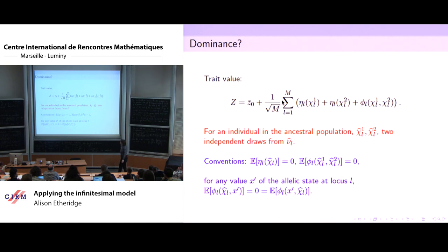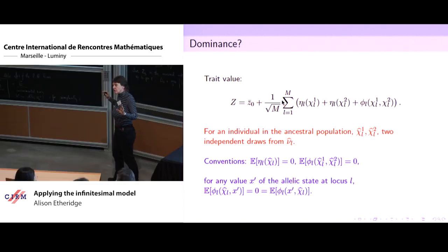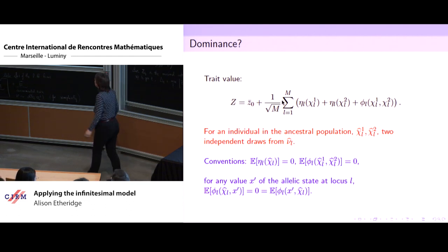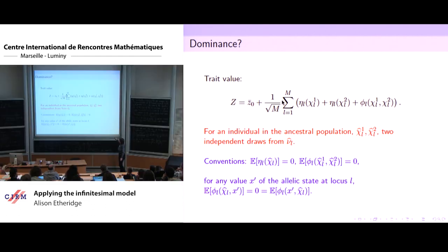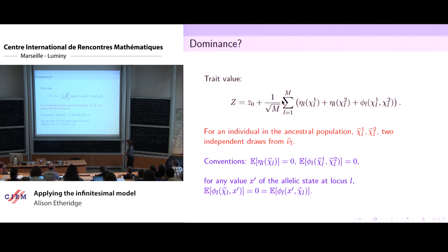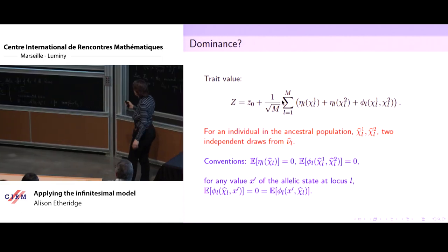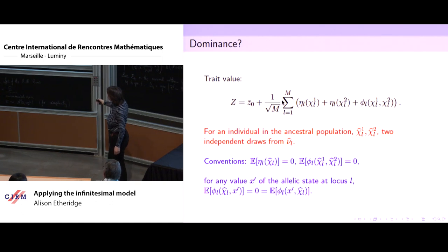We're going to assume a base population in which the allelic states are drawn independently from a distribution nu-hat, which was the distribution of allelic states in the base population. So in the base population, for convenience, we're supposing everything is in linkage equilibrium, everyone's unrelated, and we're just sampling their allelic state on each of their two chromosomes independently according to this distribution.